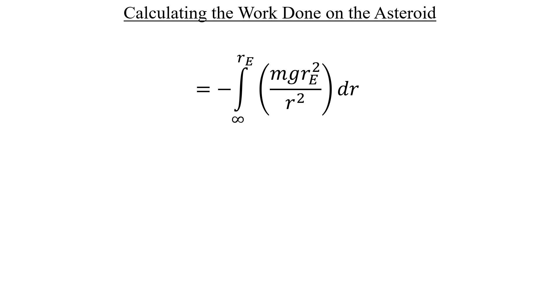The negative sign can be factored out, as well as the constants in the numerator. When we integrate 1 over R squared, we can use the power rule for integration because this expression here is equivalent to R to the negative 2 power. And when we do that, we'll get the following result.